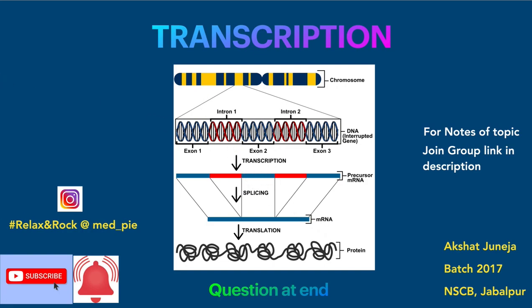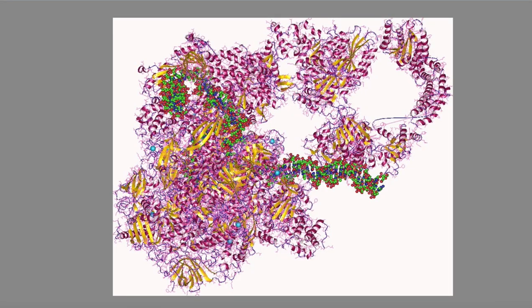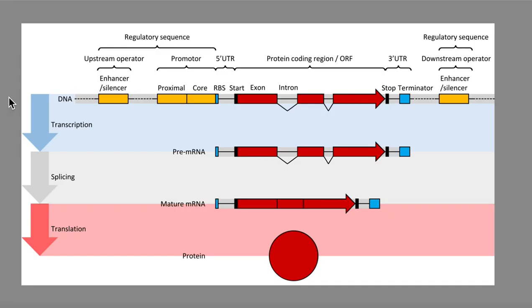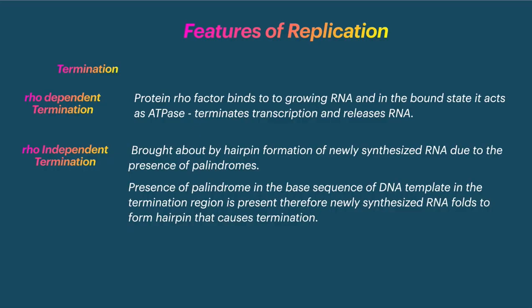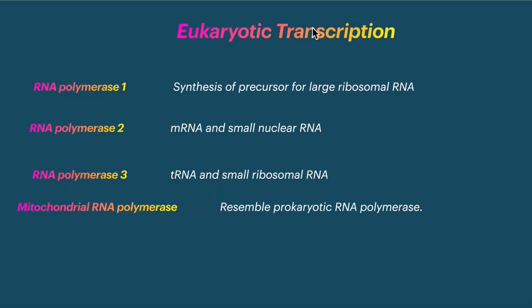In eukaryotes, there is additional processing like splicing after transcription. For eukaryotic transcription, there are 3 types of RNA polymerases plus a mitochondrial RNA polymerase: RNA polymerase 1 for large ribosomal RNA, RNA polymerase 2 for mRNA, and RNA polymerase 3 for tRNA and small ribosomal RNA.